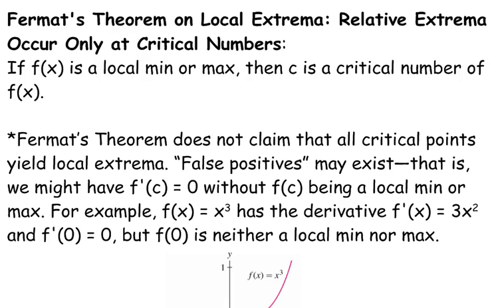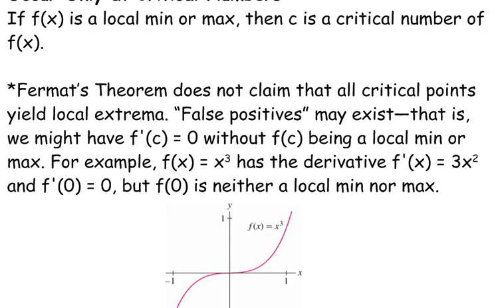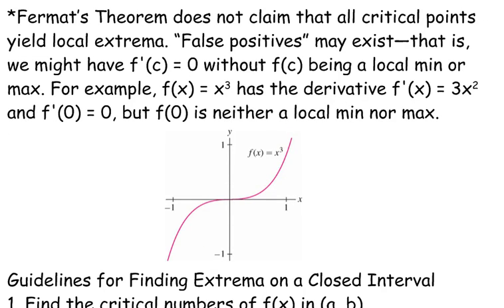False positives may exist, which means you may find that f'(c) = 0, but f(c) is not a local minimum or max. For example, f(x) = x³ has the derivative 3x², and f'(0) = 0, but if we look at the graph, f(0) is not a maximum or minimum, even though the derivative is equal to zero at zero.